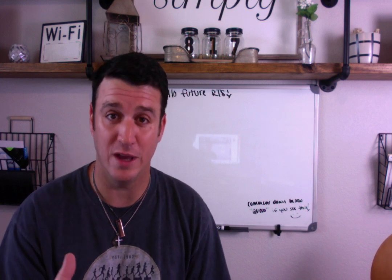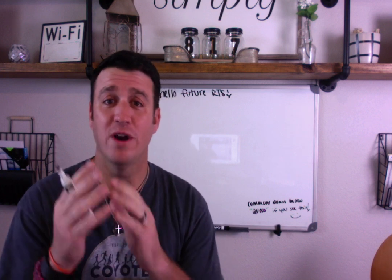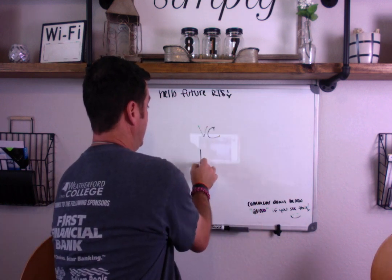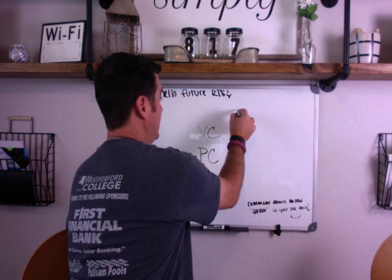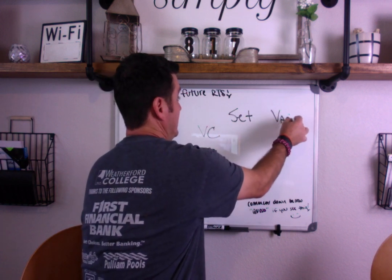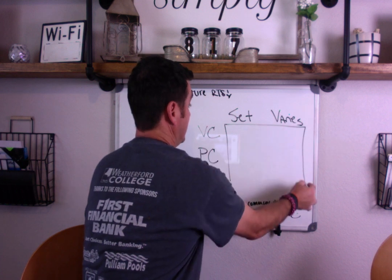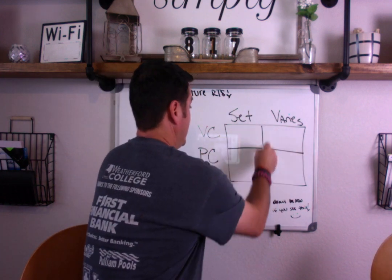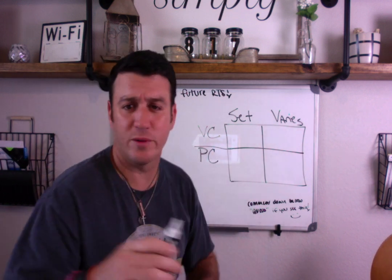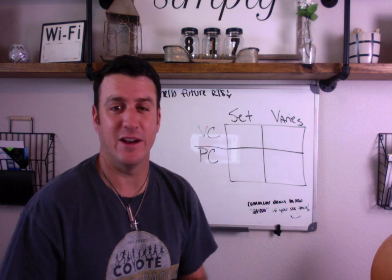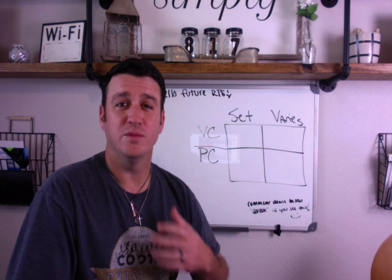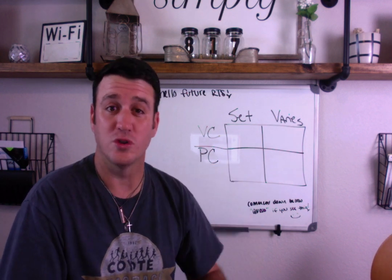The first thing you have to understand when talking about mechanical ventilation waveforms is it all comes back to understanding what is set and what varies. We're going to put on the board here volume control and pressure control. I'm going to put 'set' and I'm going to put 'varies.' I'm not going to talk about FiO2 or PEEP because those are essentially the same with every mode of mechanical ventilation. We're just talking right now about the mechanics of how the mode works when it's delivering a breath.